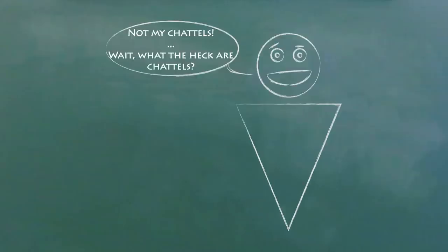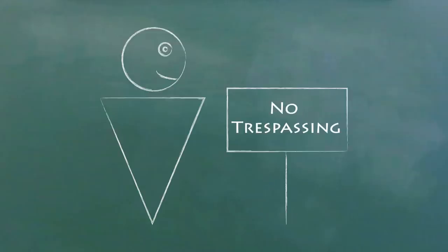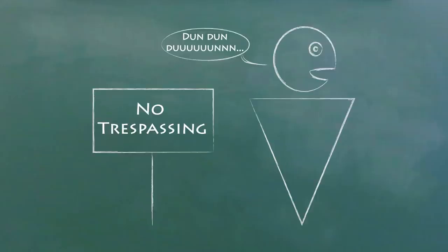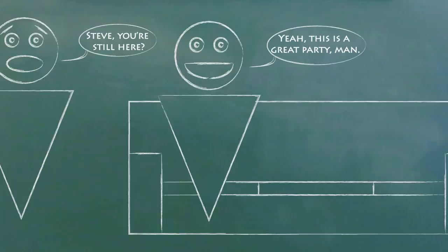Chattels is just old English for movable property. Trespass to land is when you enter someone else's land without permission, or when you enter with permission but you don't leave when the permission ends.